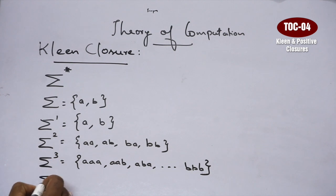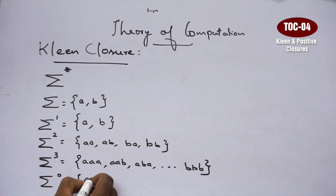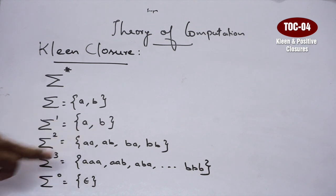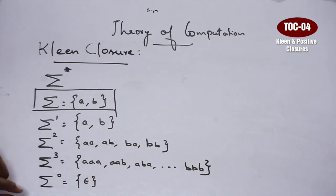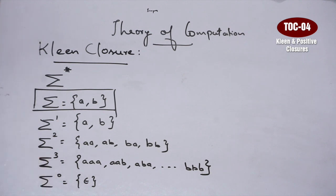String of length 0 — what is it? String of length 0 is Epsilon. So we have: string of length 0 (Epsilon), string of length 1, string of length 2, string of length 3. It is infinite. So this is Kleene closure.